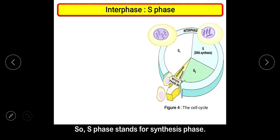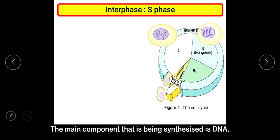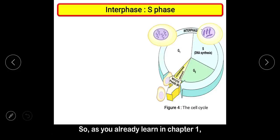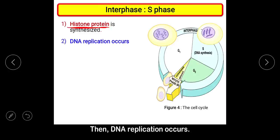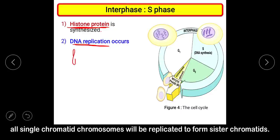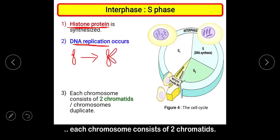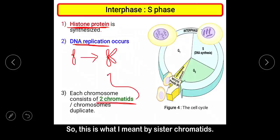The next sub-phase is S phase, which stands for synthesis phase. The main component being synthesized is DNA. As you already learned in Chapter 1, DNA comprises histone proteins. Before synthesizing new DNA, you have to synthesize new histone protein first. Then DNA replication occurs. During this process, all single chromatid chromosomes will be replicated to form sister chromatids, so each chromosome will then consist of two chromatids.